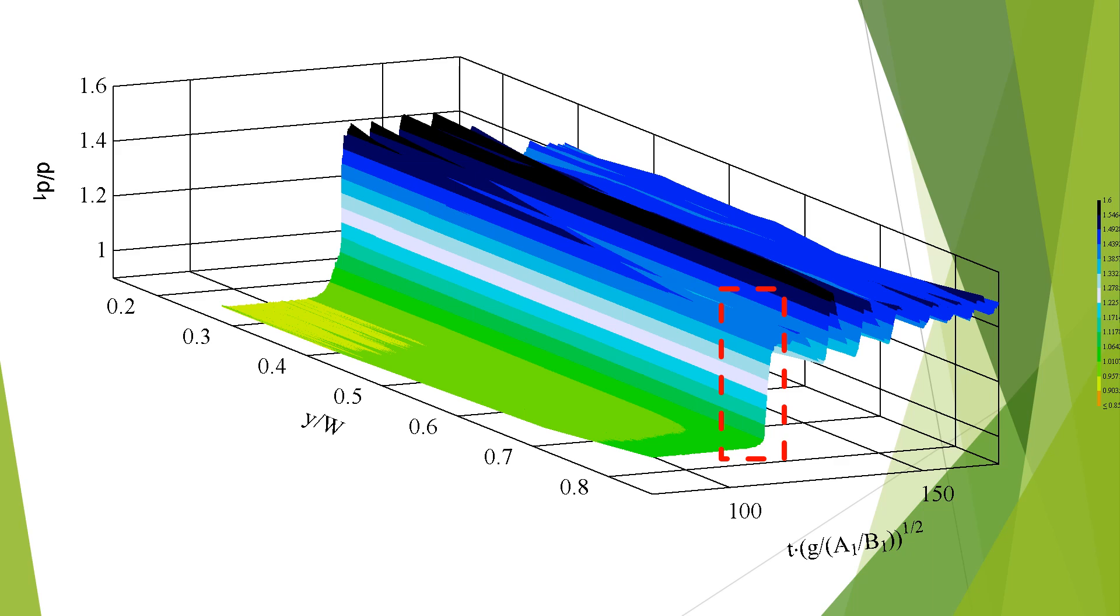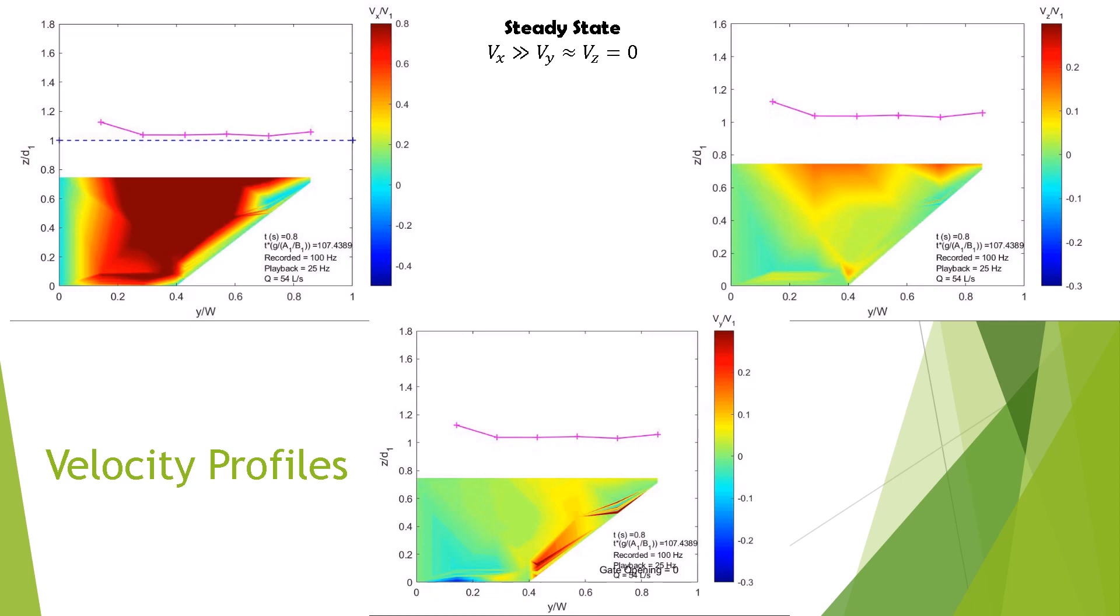In steady flow, Vx dominates whilst Vy and Vz approach zero. As the bore arrives, Vx decreases sharply and the other velocities increase.